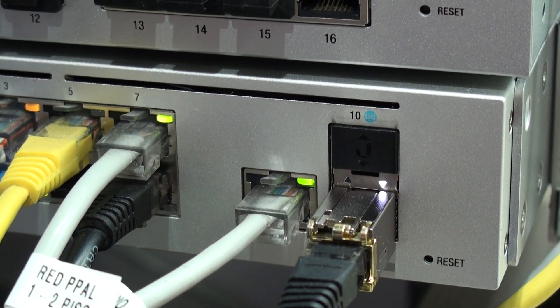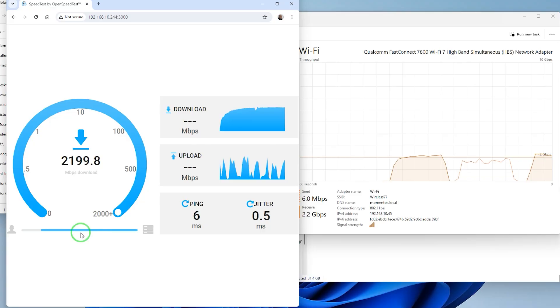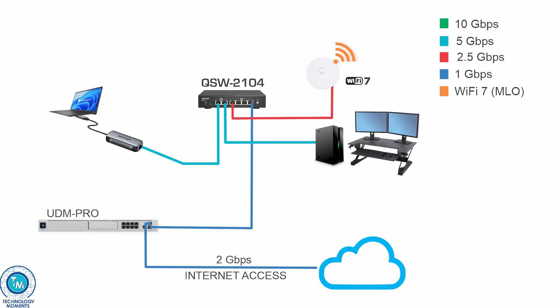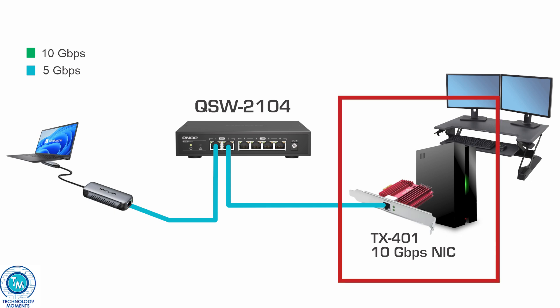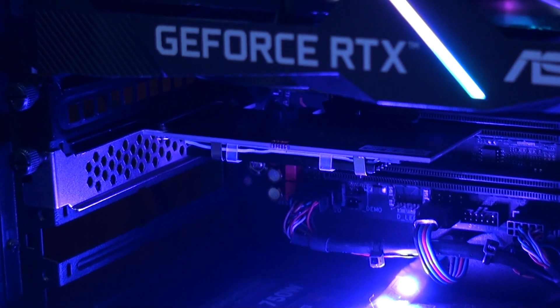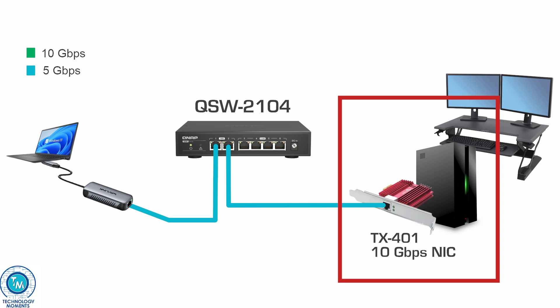For example, all modern wi-fi 7 routers include a 2.5 gigabit per second interface to your network, as wi-fi 7 is capable of delivering such speeds as we've seen in recent videos. So this is what your network should look like if you want to take advantage of 2.5 or 5 gigabit per second networks. For this particular workshop, we're going to use the following hardware: one computer running fairly recent hardware that will act as a server with a 10 gigabit per second ethernet adapter.